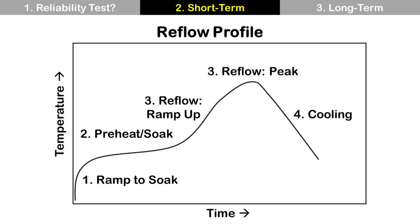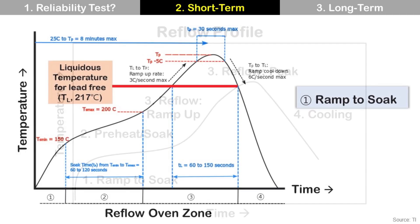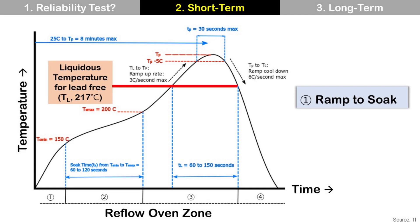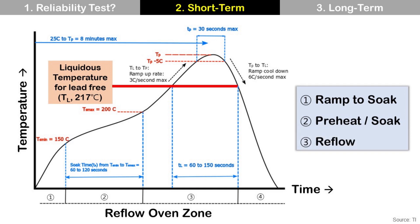Here is the reflow profile, which has 4 steps by time. Step 1 is Ramp to Soak. Step 2 is Preheat/Soak — soak minimum temperature is 150°C, soak maximum temperature is 200°C, and soak time from minimum to maximum temperature is 60 to 120 seconds. Step 3 is Reflow — ramp up and peak. For lead-free solder, liquidus temperature is typically 217°C. Ramp-up rate from liquidus to peak temperature is maximum 3°C per second. Cool-down rate from peak to liquidus temperature is maximum 6°C per second, and time above liquidus temperature is 60 to 150 seconds. Step 4 is Cooling.